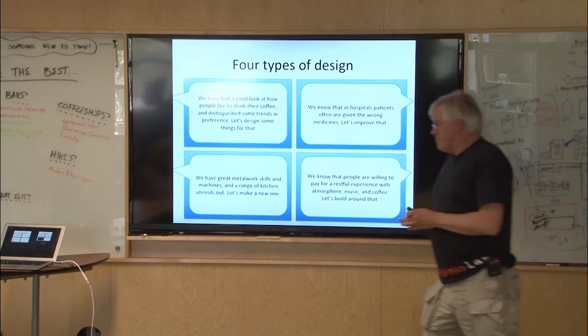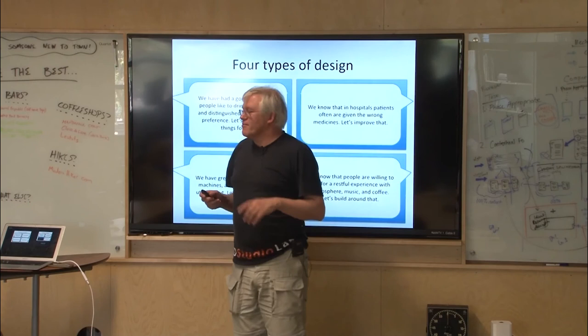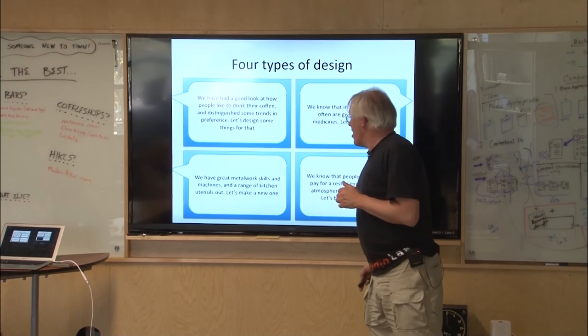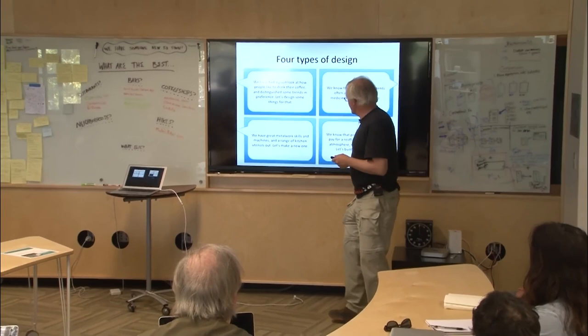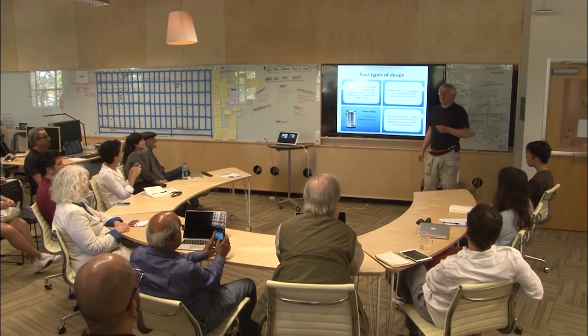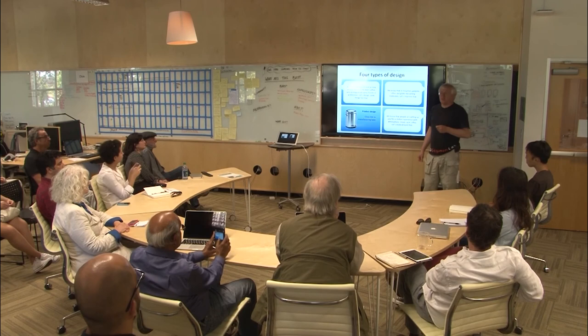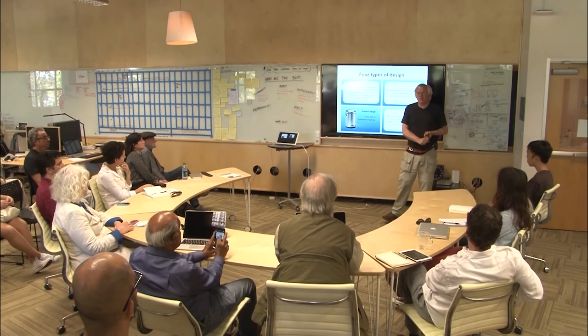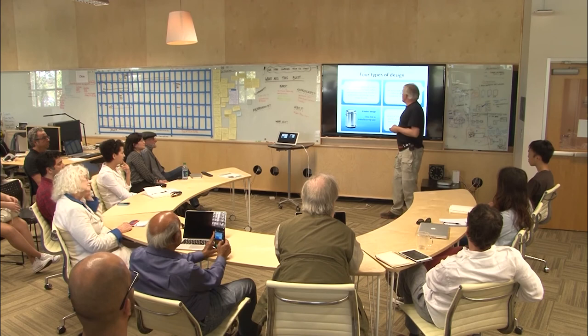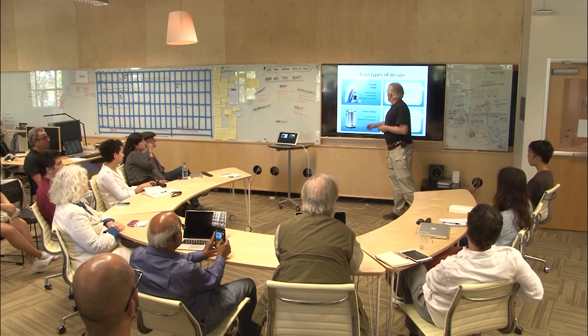Then I come to a close by stating four different types of design that I've seen over the last time. Traditionally, when I came in 1984, this was standard. There's a manufacturer who has certain machines. We have great metalwork skills and machines and range of kitchen utensils. Let's make a new one.